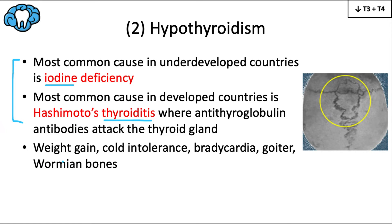Symptoms of hypothyroidism include weight gain, cold intolerance, and bradycardia — the opposite of hyperthyroidism — but a goiter is once again possible, as are Wormian bones, which are small extra bones found between the sutures of the cranial vault. We care about hypothyroidism dentally because of the risk of exaggerated response to central nervous system depressants (sedatives and narcotics) and myxedema coma, which we'll discuss shortly.